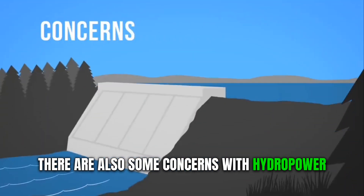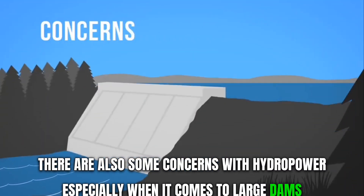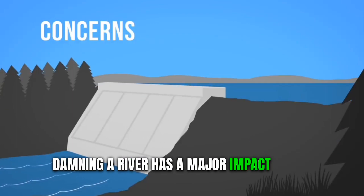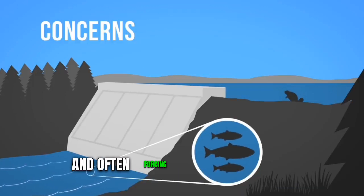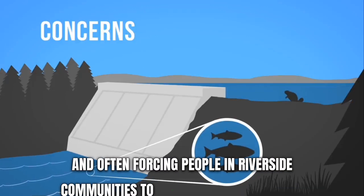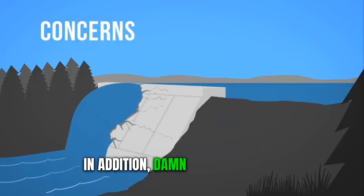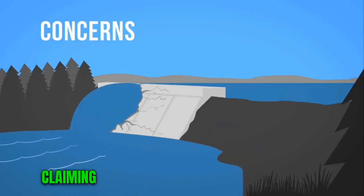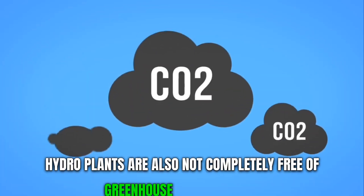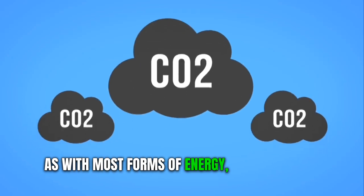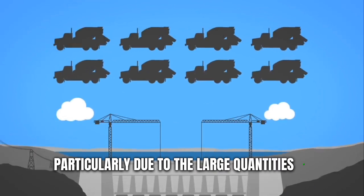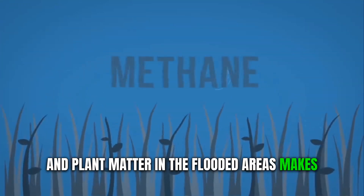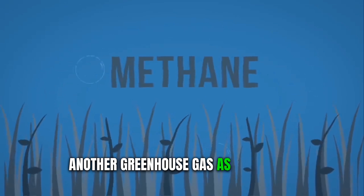There are also some concerns with hydropower, especially when it comes to large dams. Damming a river has a major impact on the local environment, changing wildlife habitats, blocking fish passage, and often forcing people in riverside communities to move out of their homes. In addition, dam failures can be catastrophic, claiming the lives of those living downstream. Hydro plants are also not completely free of greenhouse gas emissions. Carbon dioxide emissions happen during construction, particularly due to the large quantities of cement used. And plant matter in the flooded areas makes methane, another greenhouse gas, as it decays underwater.